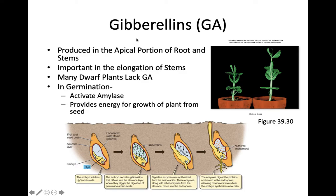Now let's talk about gibberellins, or gibberellic acid. Gibberellins are named after a fungus called Gibberella fujikuroi, which causes rice plants to grow abnormally tall when it parasitizes them. So these were first discovered in a parasite of plants, but were later found to be produced by plants to aid in growth and the elongation of stems — which again should be reviewed from your lab.